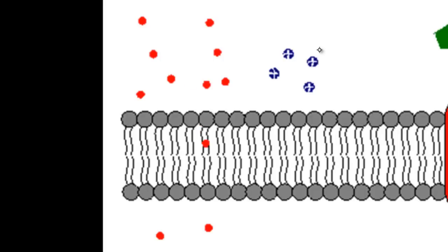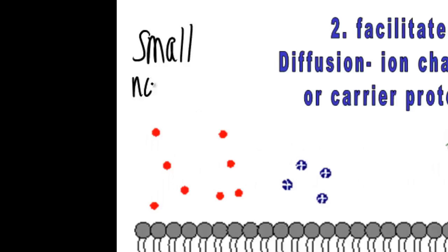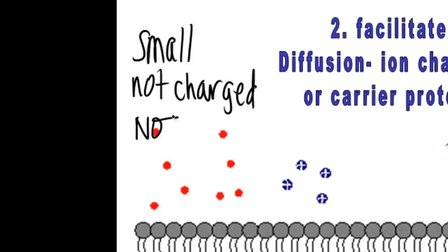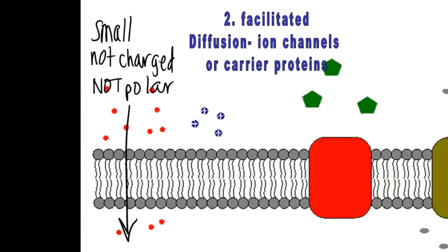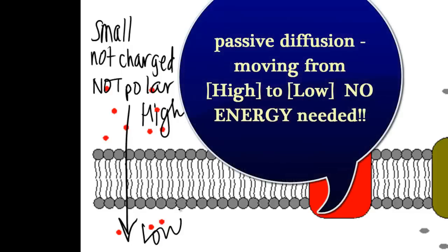With simple diffusion, the red molecule shown is really small and not charged, so it can move into the cell. If you're small, not charged, and not polar — meaning you're not something like water — then you can move straight across those phospholipids into and out of the cell. This happens as long as you're moving from a high concentration of solutes to a low concentration, and it doesn't take any energy at all. It just happens naturally because things want to be equal.